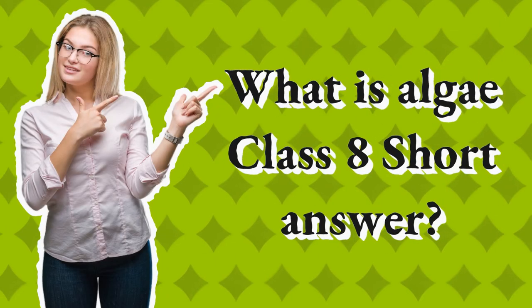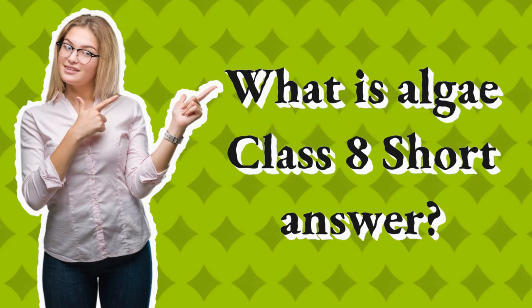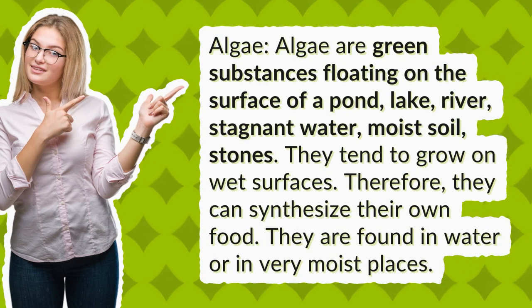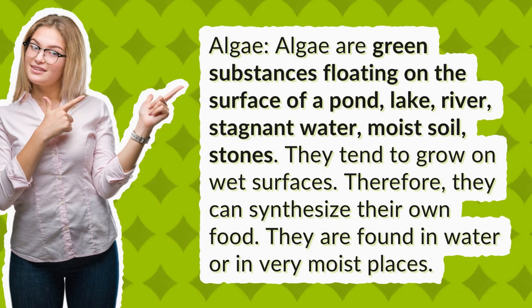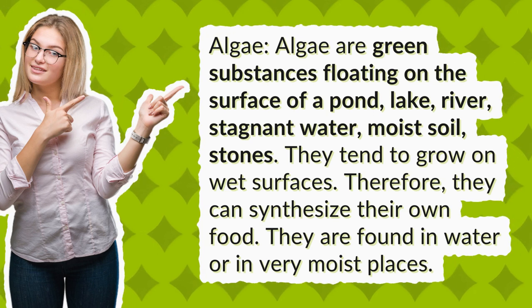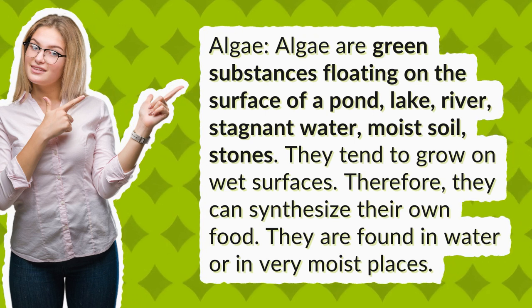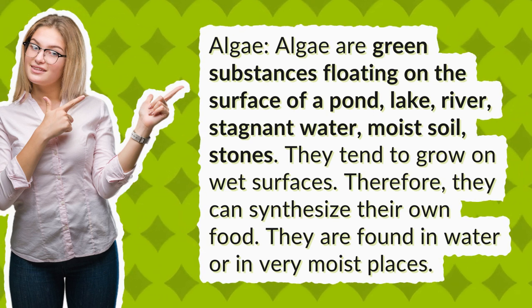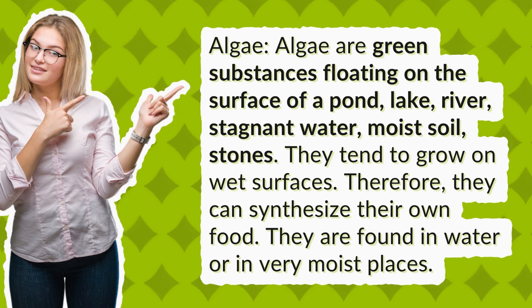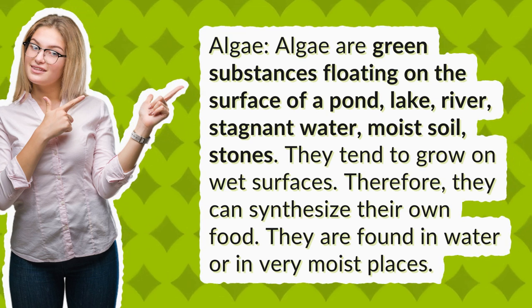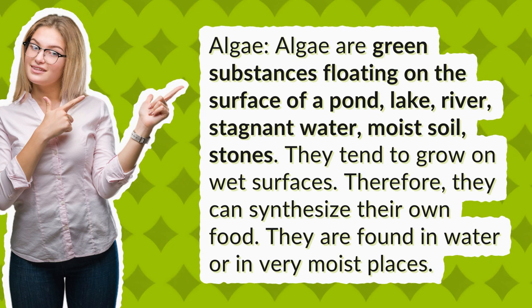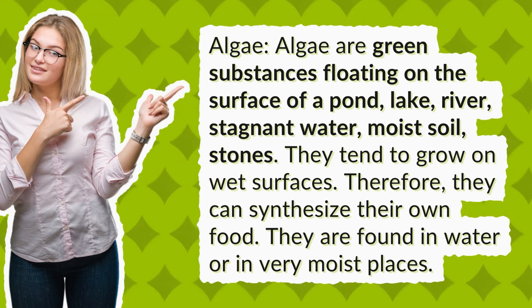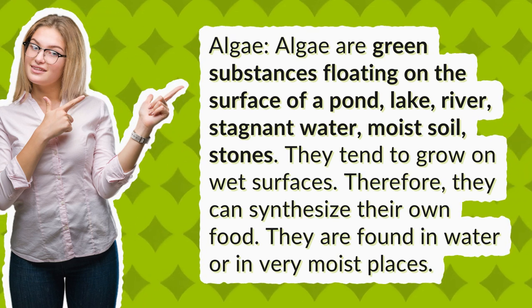What is algae class 8 short answer? Algae are green substances floating on the surface of a pond, lake, river, stagnant water, moist soil, and stones. They tend to grow on wet surfaces. Therefore, they can synthesize their own food. They are found in water or in very moist places.